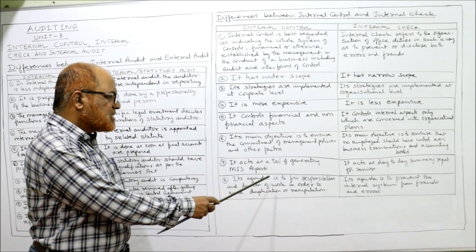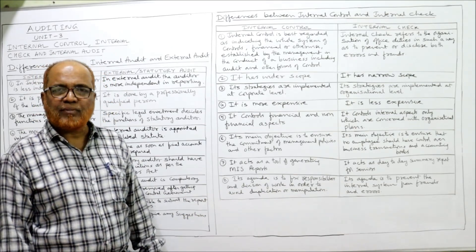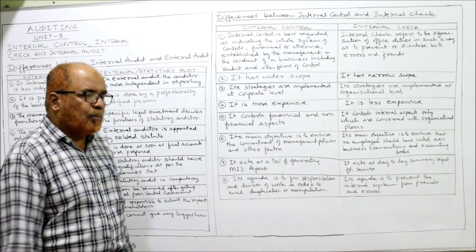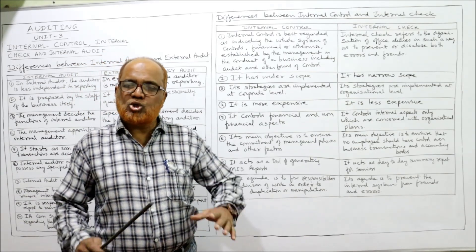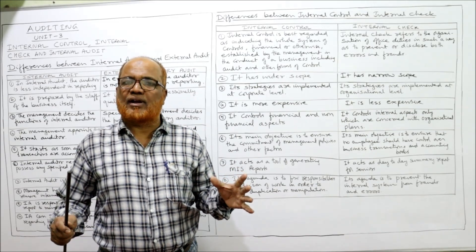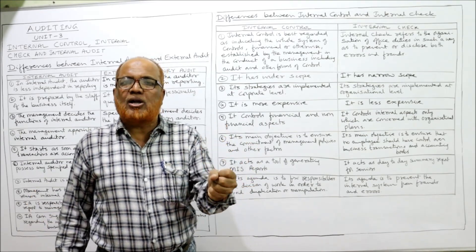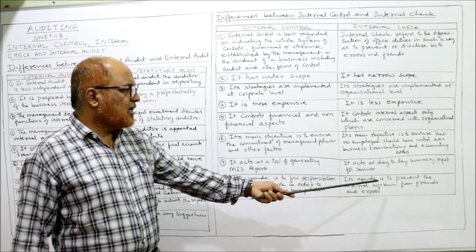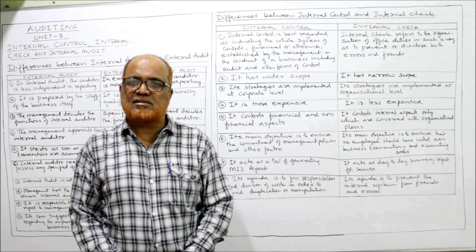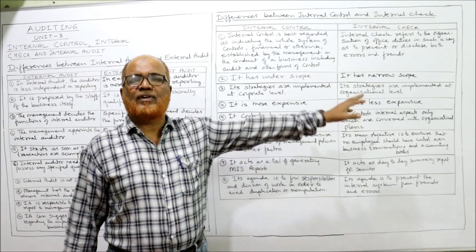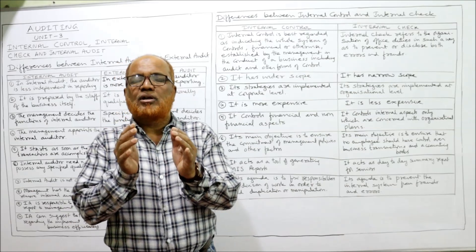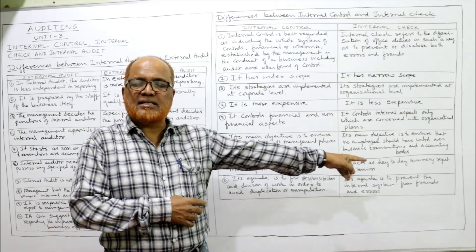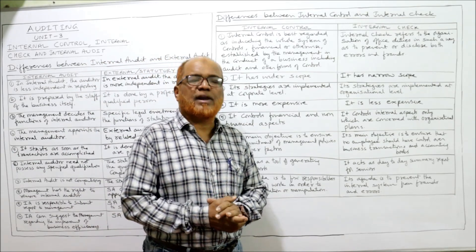Last difference: agenda. The main agenda of internal control is to fix responsibility and division of work in order to avoid duplication or manipulation — the complete system should be controlled. The agenda of internal check is to prevent the internal system from fraud and errors; the main concentration is building a system through which fraud and error are prevented, minimized, and stopped.